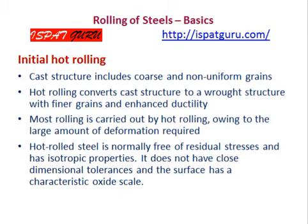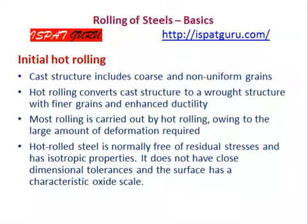The hot rolling process is being discussed. The starting material is normally a casting with a coarse grain structure, which comes from the casting machine. This coarse grain structure has non-uniform grains. Hot rolling converts this coarse grain structure into a wrought structure with finer grains, and this finer grain structure gives it enhanced ductility.